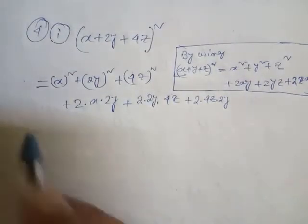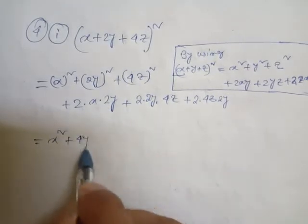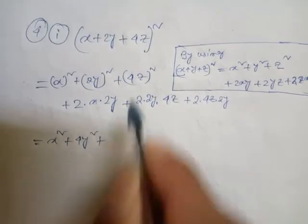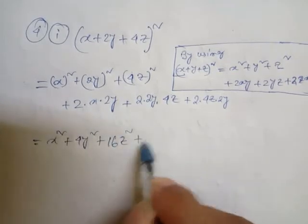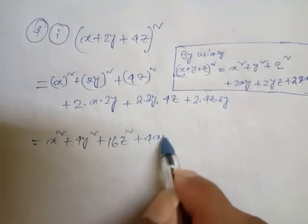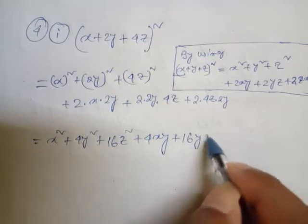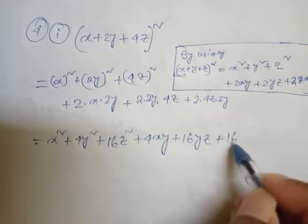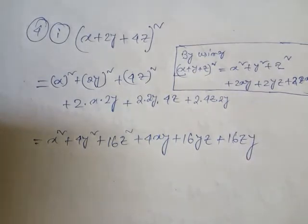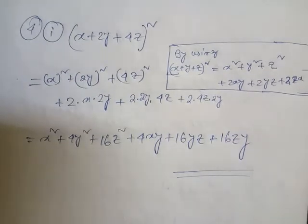Now for 4(i): (x + 2y + 4z)². Substituting into the identity, we get: x² + 4y² + 16z² + 4xy + 16yz + 16zx. This is the answer of 4(i) by using the suitable identity.